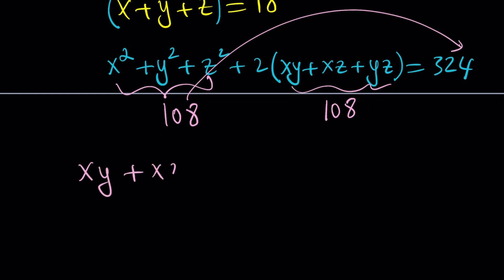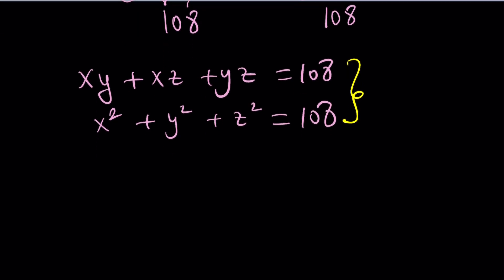xy plus xz plus yz equals 108. But we also know that x squared plus y squared plus z squared is 108. What does that mean? This implies that these two quantities are equal. So if two things are equal to the same thing, then they're equal. That's a basic principle, which is very helpful in a lot of cases.